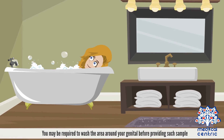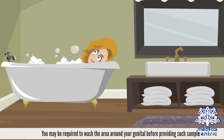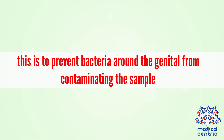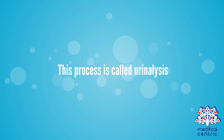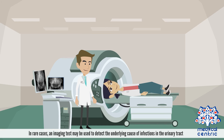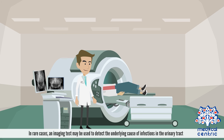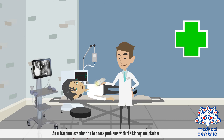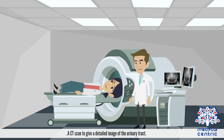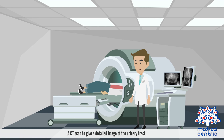You may be required to wash the area around your genitals before providing such a sample, to prevent bacteria around the genital from contaminating it. This process is called urinalysis. In rare cases, an imaging test may be used to detect the underlying cause of infections, such as an ultrasound examination to check problems with the kidney and bladder, or a CT scan to give a detailed image of the urinary tract.